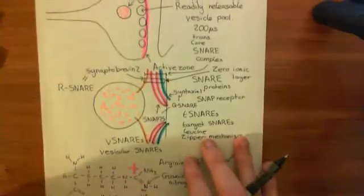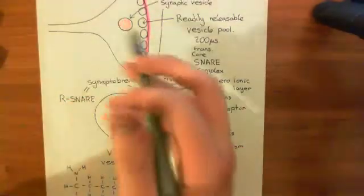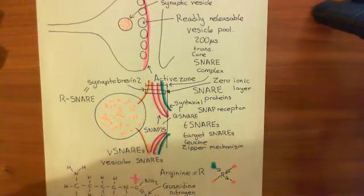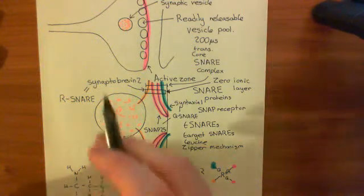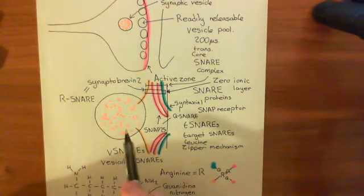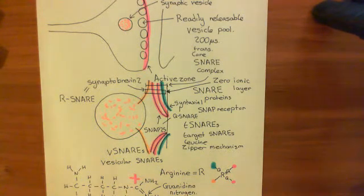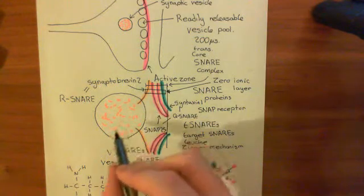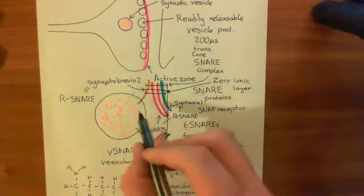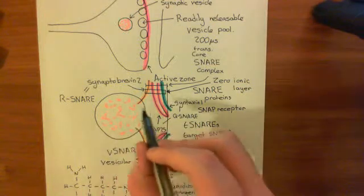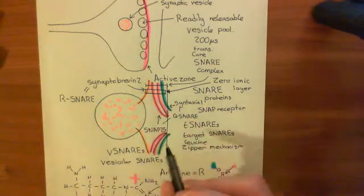Now, that's not what you want, because we've just created this synaptic vesicle and we don't know whether an action potential has come or not — and now we're getting it fusing with the plasma membrane. You want the vesicles, these synaptic vesicles, to be released only when an action potential comes along the axon and arrives at the axon terminal. Something has to stop these SNAREs from fusing the synaptic vesicle membrane with the plasma membrane.